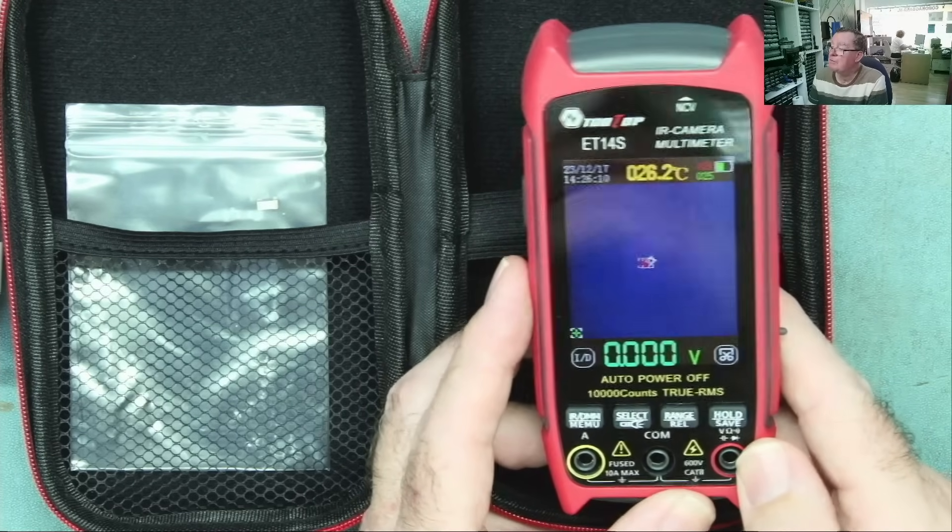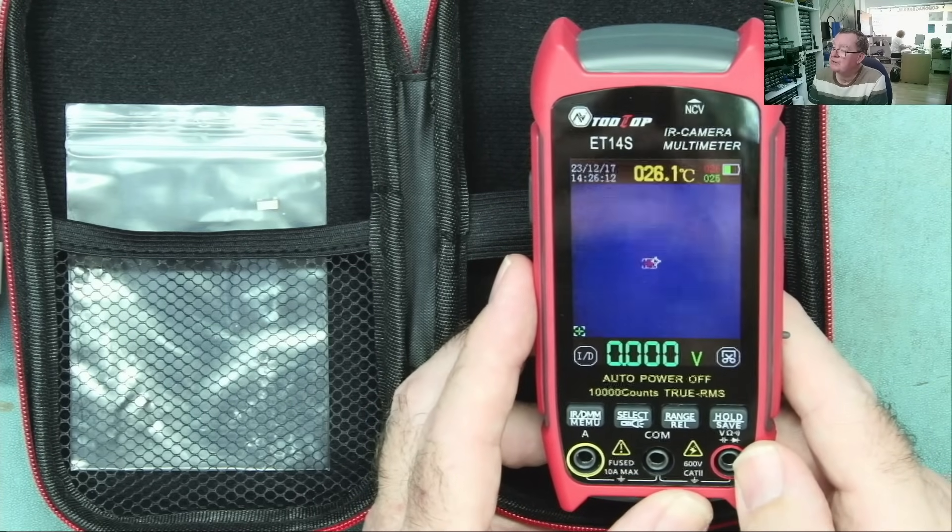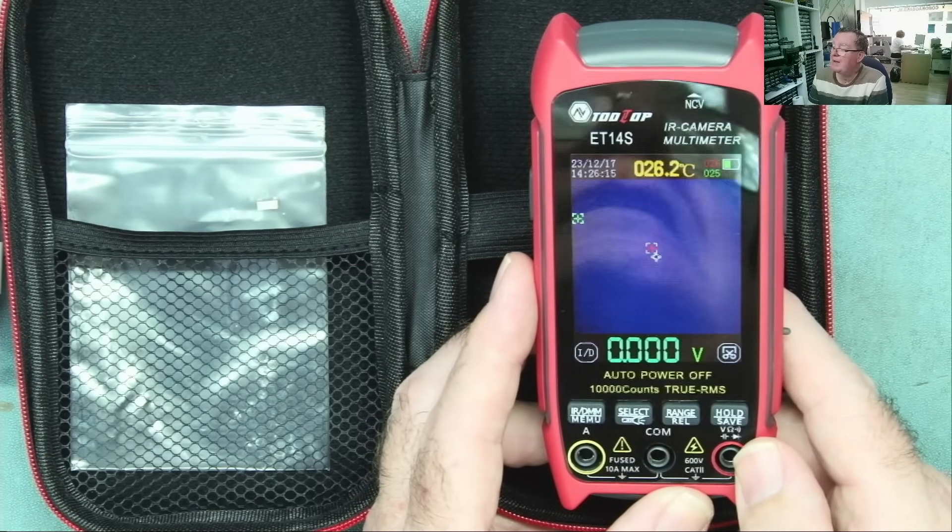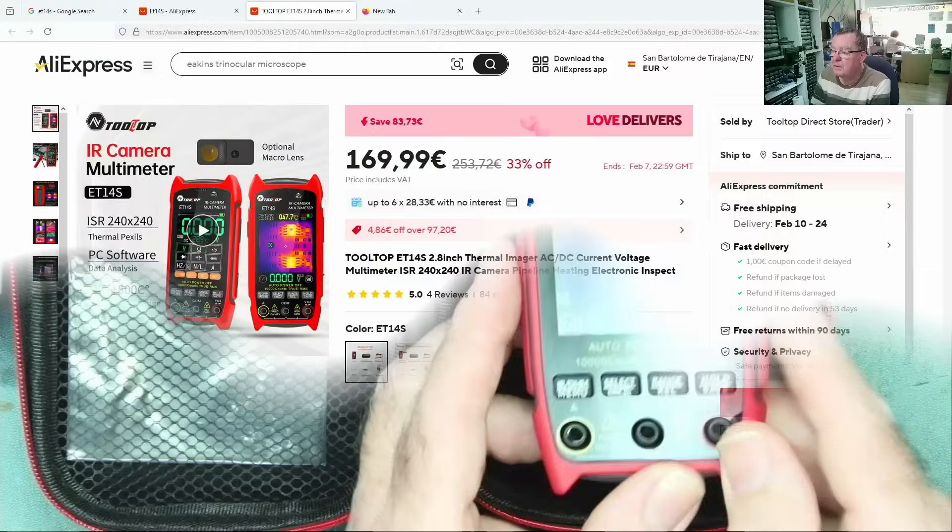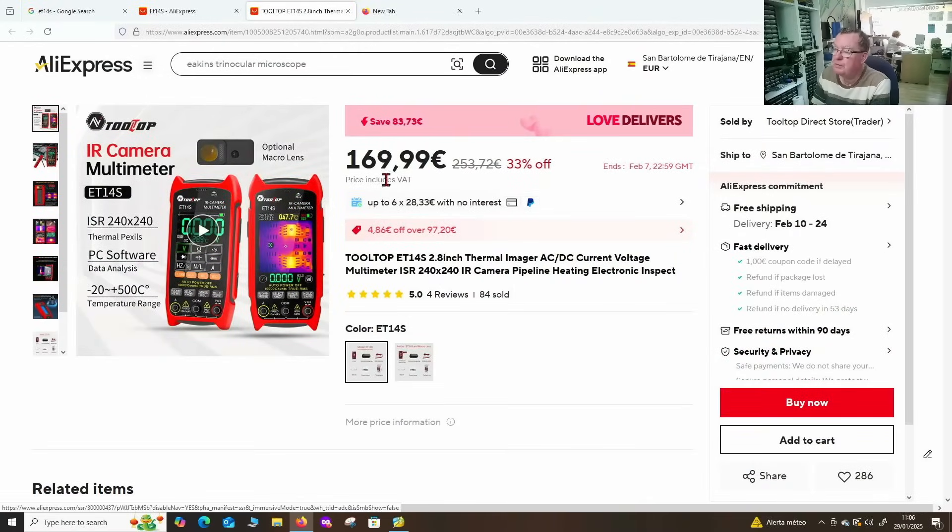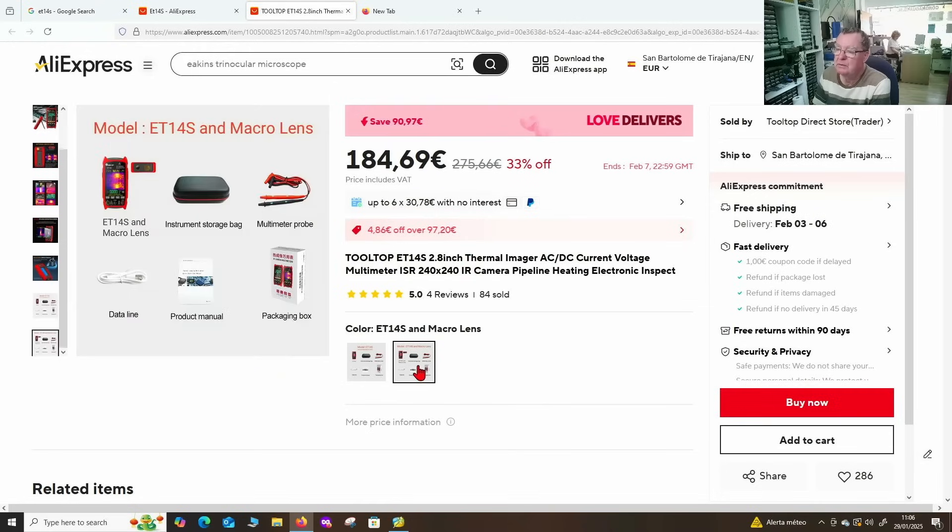But first, let's have a look online. Let's see how much this costs, and we'll compare that with the ET-13S. The best deal I can find at the moment, 170, let's call it, euros. That's without the macro lens. So you can actually buy this with or without. With the macro lens, 184.69. Includes VAT. Free shipping.